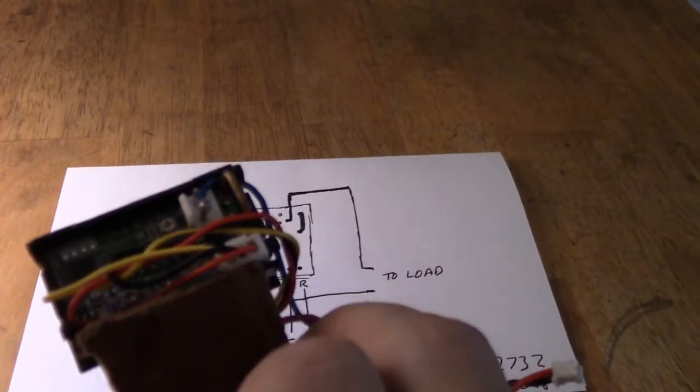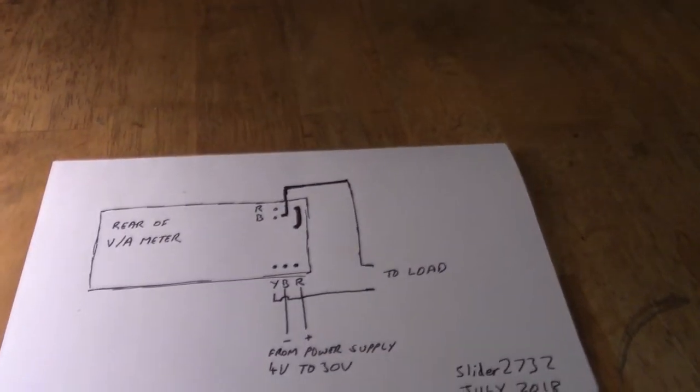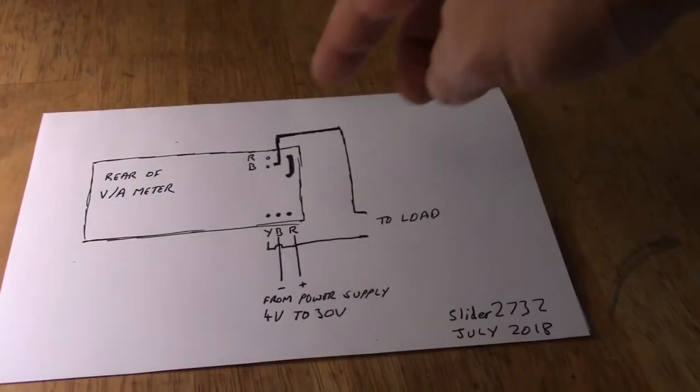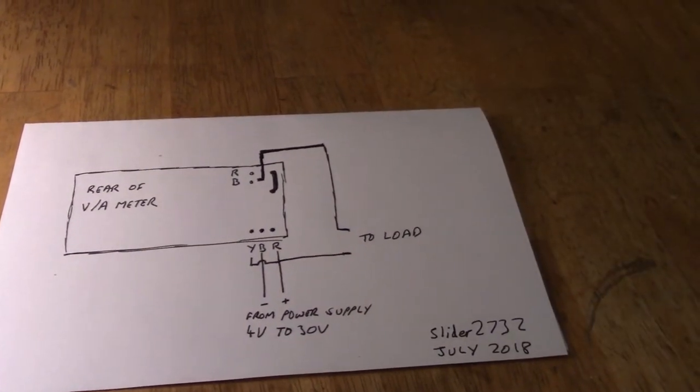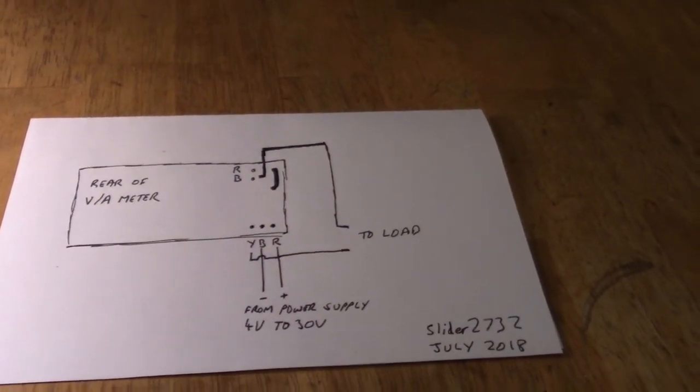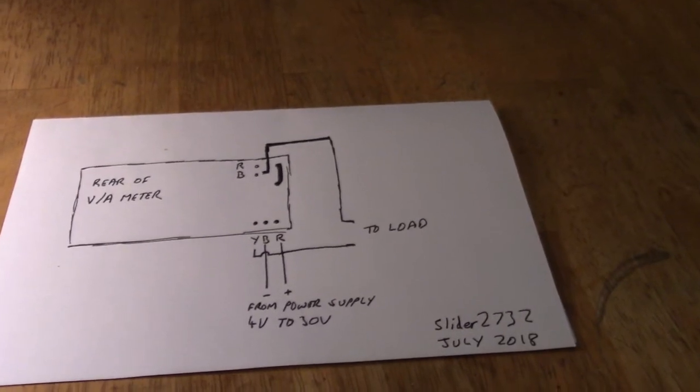There is also an important 10 amp shunt. Now you'd expect the red and the black to be the outputs at the top. They have 10 amp wiring on them but it doesn't actually work that way, and that's what's important here because you don't see a lot of these diagrams and explanations on YouTube.